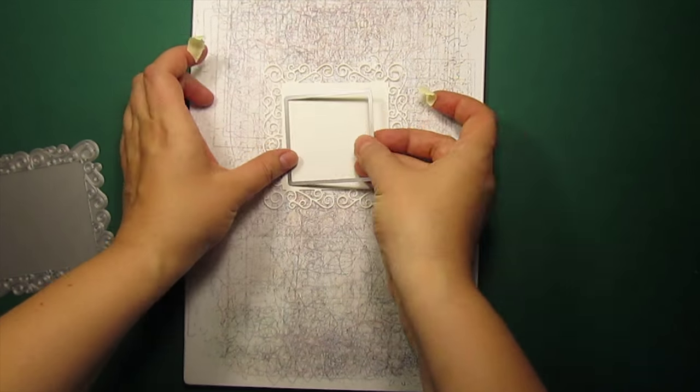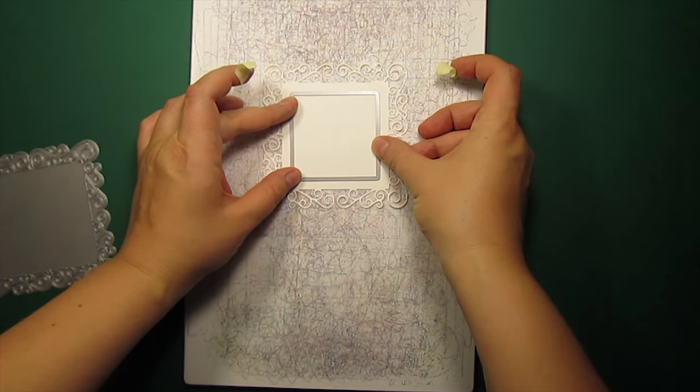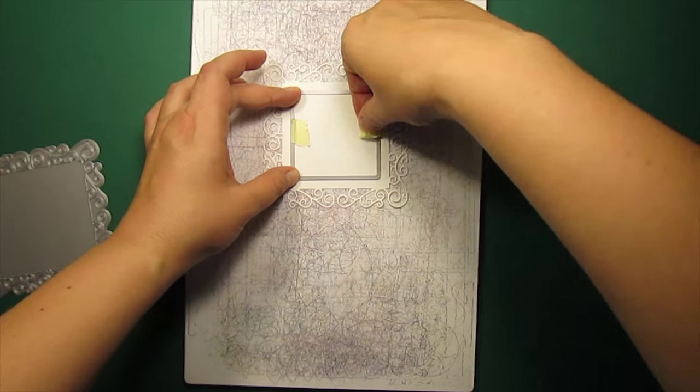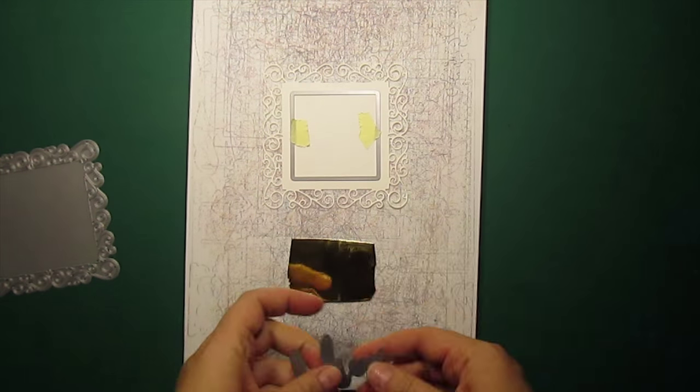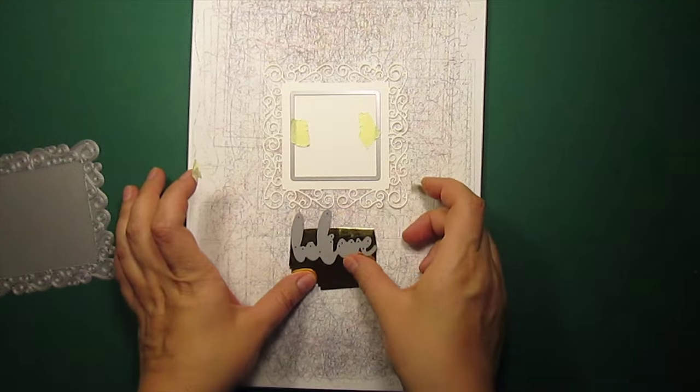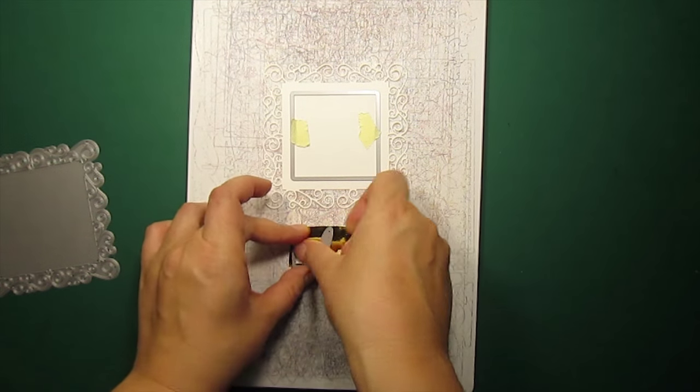Now I'm going to use a square from the Studio Square layer set by Memory Box to make an open frame. For the sentiment I'm going to take a fancy believe die by Poppy Stamps.